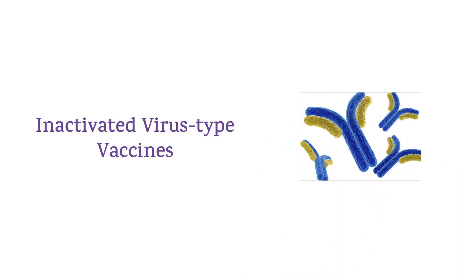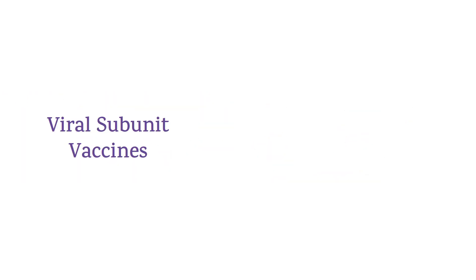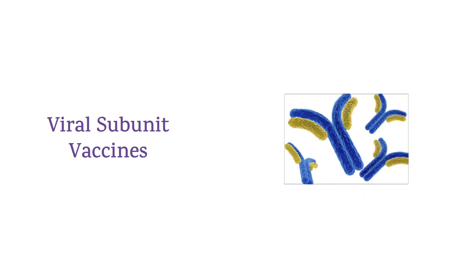But inactivated virus type vaccines don't produce cytotoxic T cells; they produce only antibodies, for example Sinopharm and Sinovac. And viral subunit vaccines make mainly antibodies, for example Novavax.